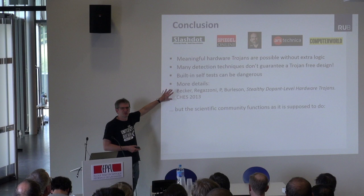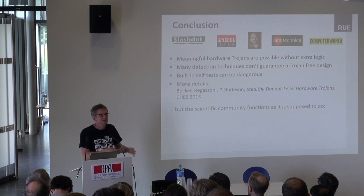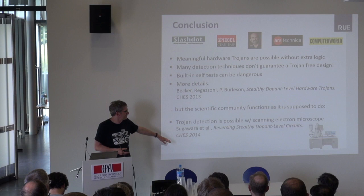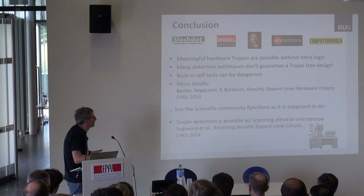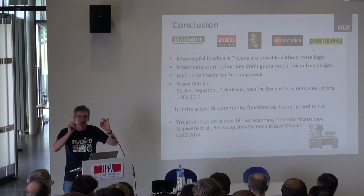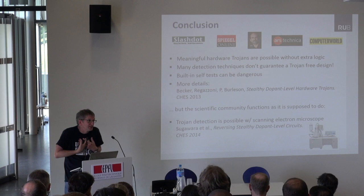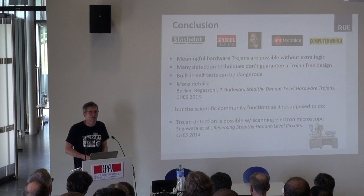A group in Japan then showed that with a scanning electron microscope you can in fact color the different doping concentrations — it's not easy and takes some time, but it can be done. Our personal opinion: without being a material scientist, you can probably improve further on detection. If you know this is an attack you're worried about, people in semiconductor design can come up with more sophisticated countermeasures.